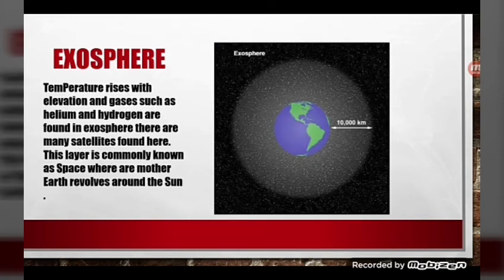The exosphere is the outermost layer. Temperature rises with elevation, and gases such as helium and hydrogen are found here. There are many satellites in this layer. It is commonly known as space, where our mother Earth revolves around the sun.